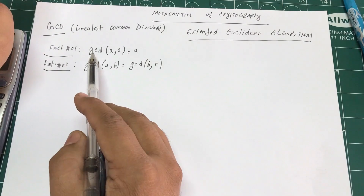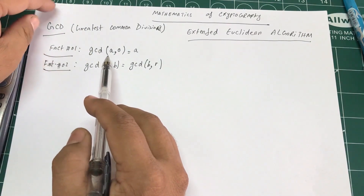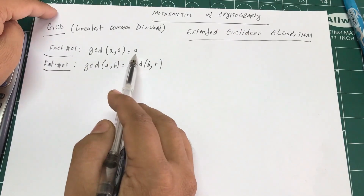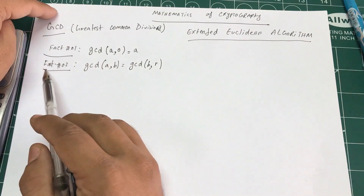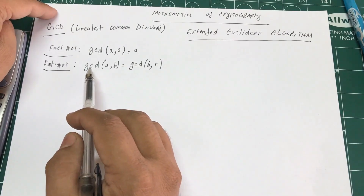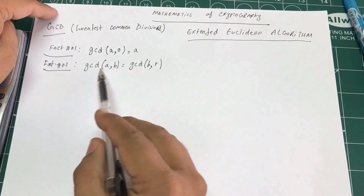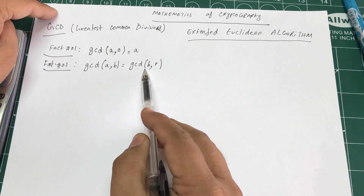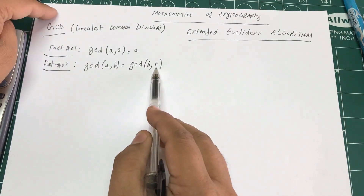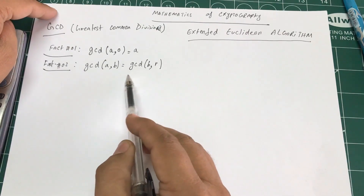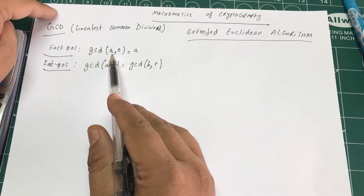To recap: if you are given two integers where one is zero and the other is some positive integer, the GCD is that positive integer. If given GCD(A, B), compute GCD(B, R) where R is the remainder of A divided by B, and continue dividing until you reach the zero condition.